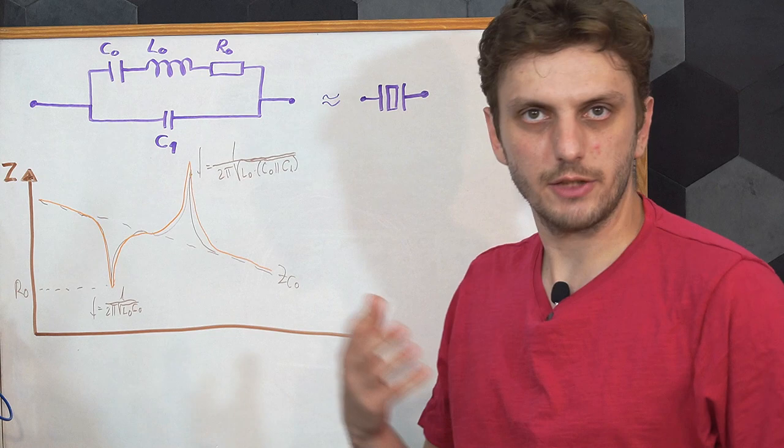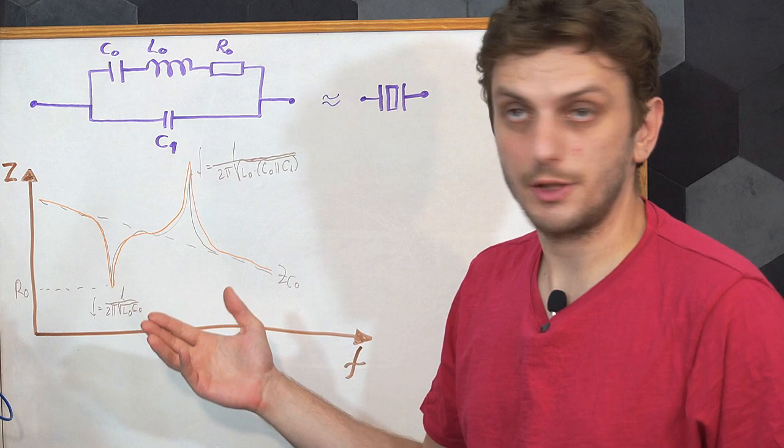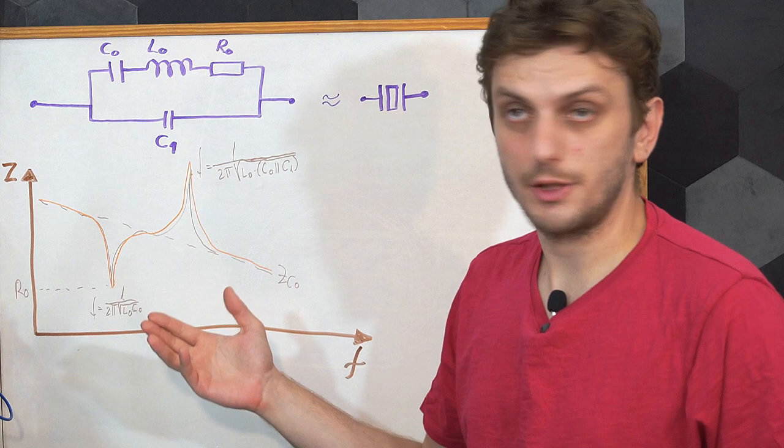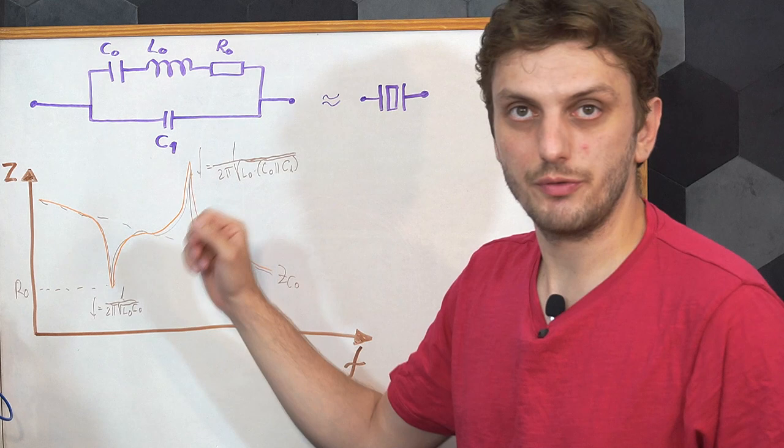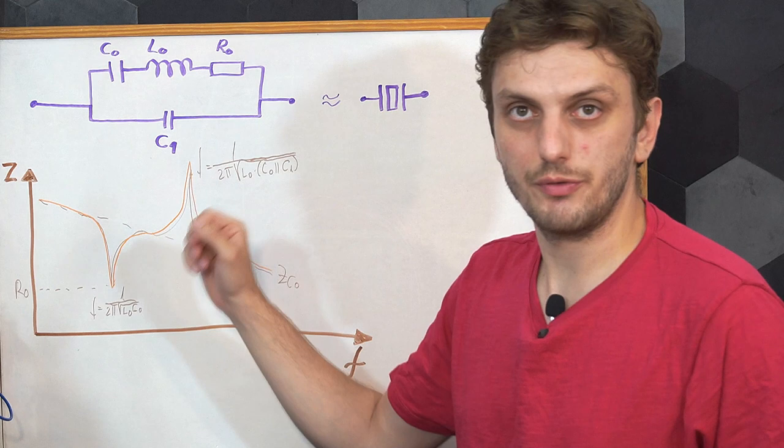Now it's also important to add that from a terminology point of view, the parallel capacitor is usually called a shunt capacitor, and the series components are called motional. So we have a motional capacitor, motional inductor, and motional resistor. But the resistor is also referred to as an equivalent series resistor or just a simple series resistor.